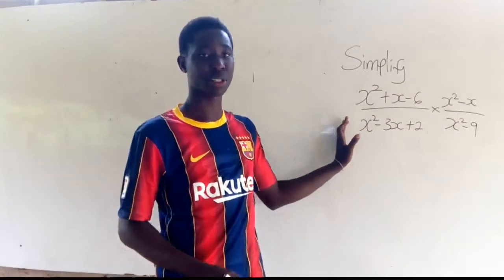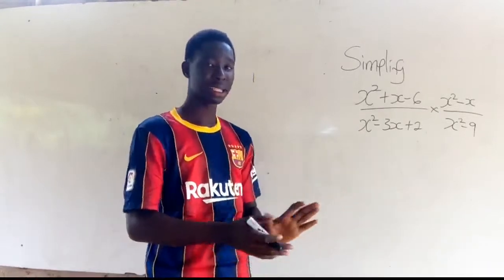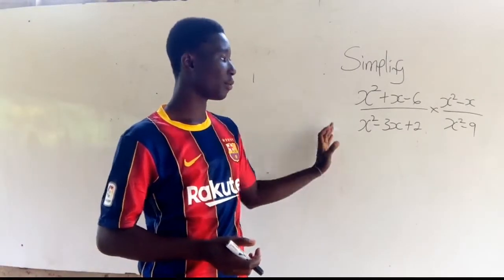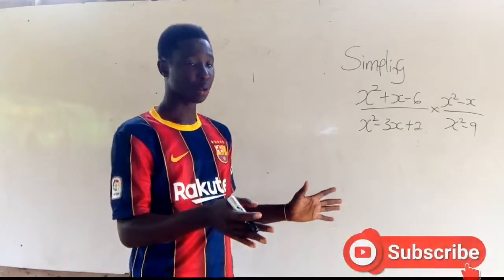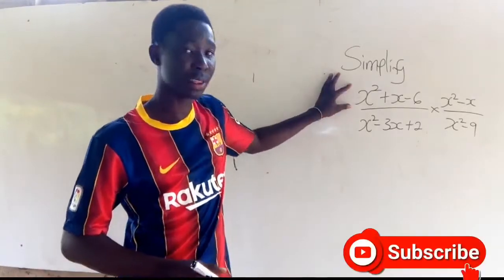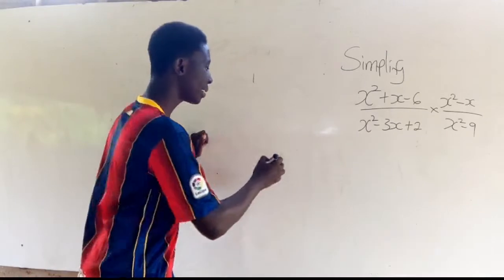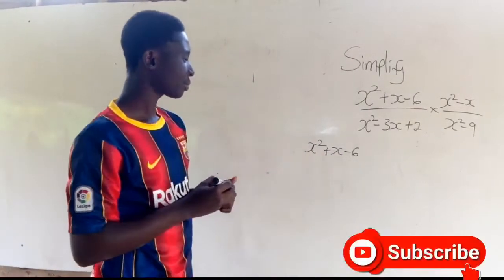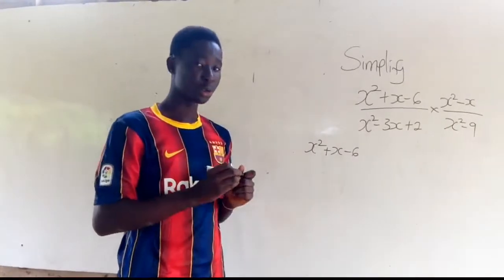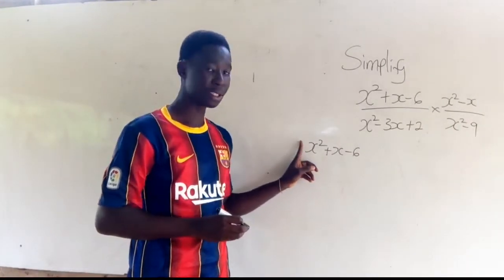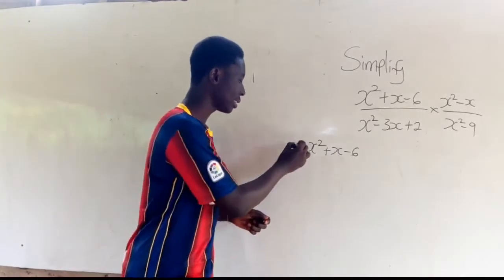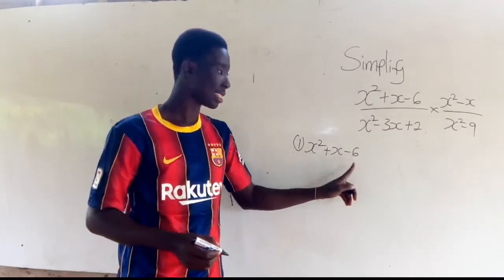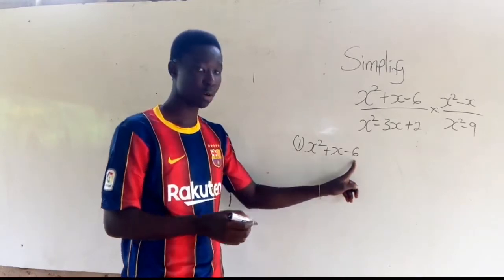We have to simplify this expression, but before we can simplify it, we need to do the necessary factorization to find our final result. Let's pick the numerator x squared plus x minus 6. We are going to pick the coefficient of x squared, which is 1, and multiply it with minus 6, so 1 times minus 6 gives us minus 6.